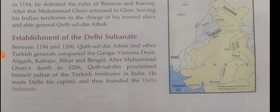Firuz Tughlaq could not win back the lost territories, but he reduced taxes, improved agriculture and commerce, built new towns, canals, and promoted learning. Taimur Lang invaded India and looted Delhi in 1398. Taimur's governor Khizr Khan established the Sayyid dynasty.